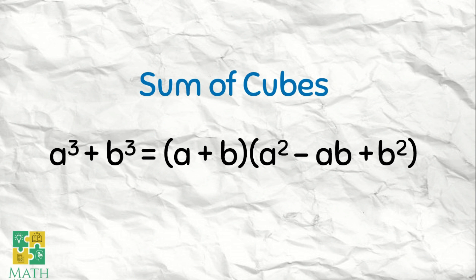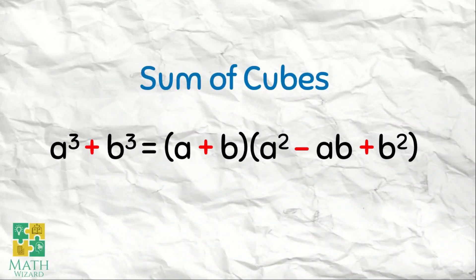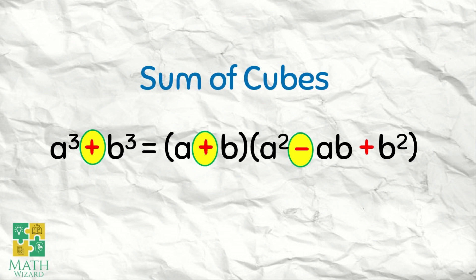A cubed plus B cubed is equal to A plus B, multiplied to A squared minus A times B plus B squared. The first parenthesis is just the base of the first and the second term — copy lang the sign. The second parenthesis: the first term is the square of the first term from the given problem. The opposite of the sign: if it's a plus, this would be a minus, and then we multiply the two bases A times B, and then we square the last term, kaya meron tayong B squared. Take note of the sign: if it's a sum of cubes, the first parenthesis is a plus, and then on the second parenthesis the first sign is the opposite — if it's a sum, then it's a minus, and then plus. The last term is always plus.